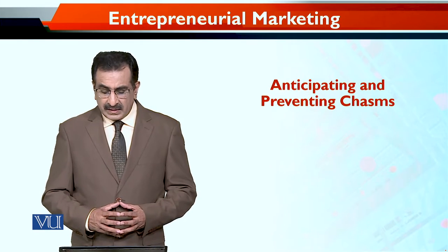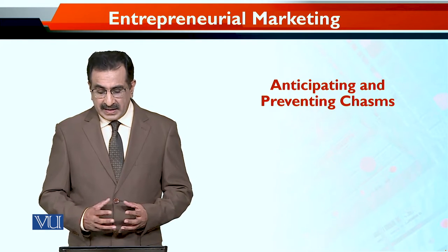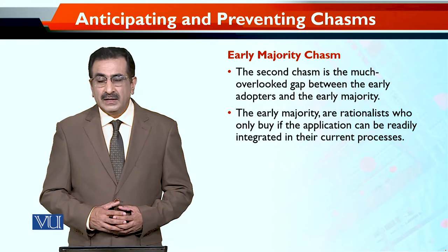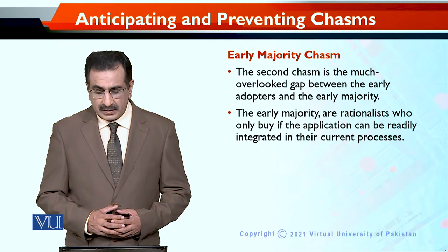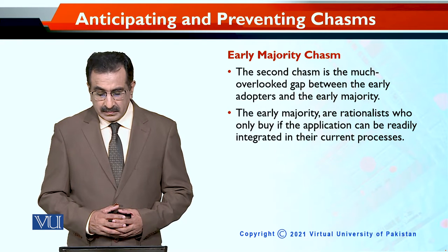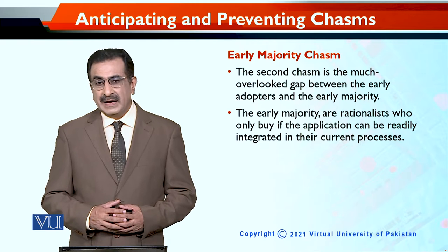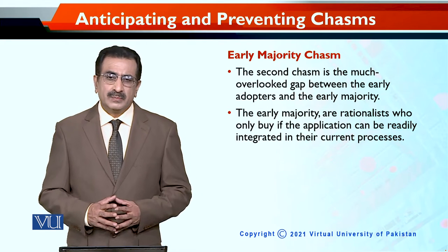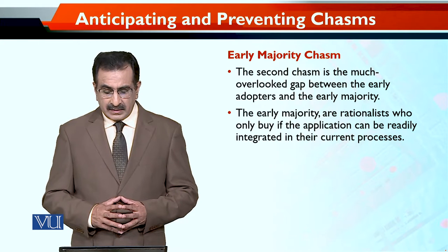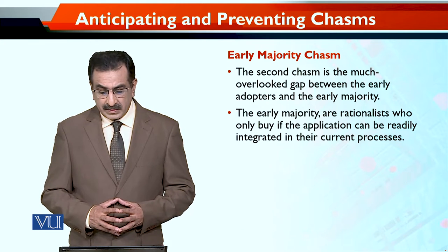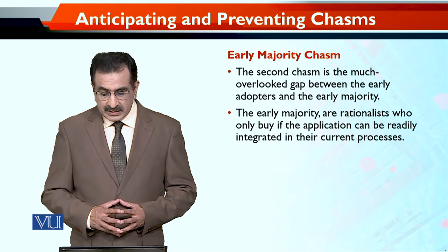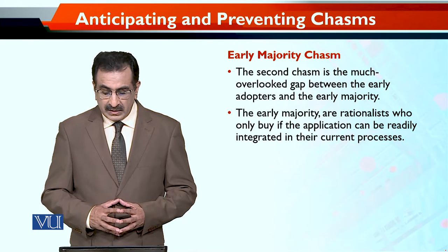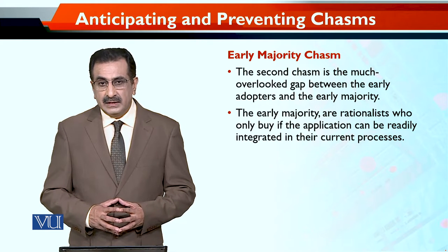Anticipating and preventing chasm, continued. Here we are talking about the early majority chasm. We discussed the early adopters chasm and we discussed the early majority's chasm. This second chasm is a much overlooked gap between the early adopters and the early majority.